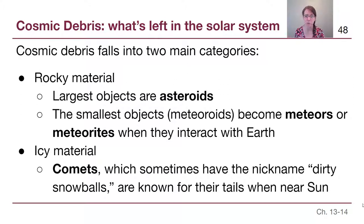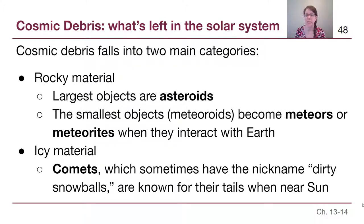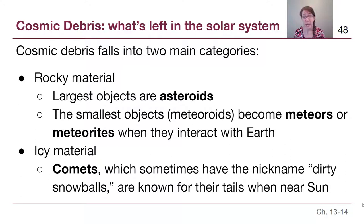When meteoroids interact with Earth, that's when we really care about them, and we'll talk about how the terms meteors and meteorites are different from each other. The other big category is icy material, and primarily what we're talking about is comets.